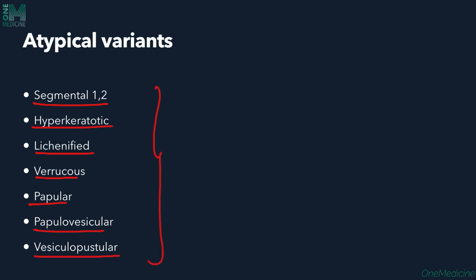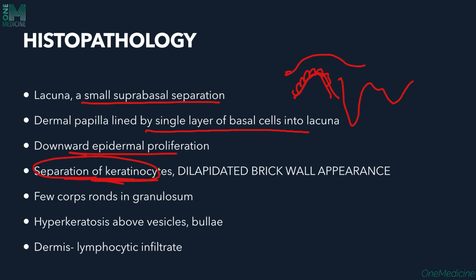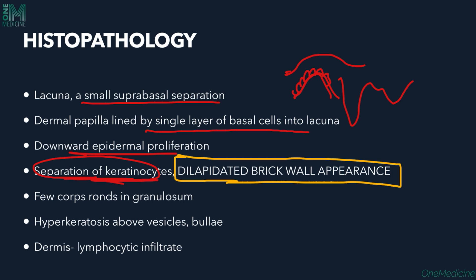On histopathology, a lacuna — a small suprabasal separation — is found just above the epidermis. The dermal papilla, lined by a single layer of basal cells, protrudes into the lacuna. Downward proliferation of the epidermis also occurs. Separation of keratinocytes due to desmosome destruction gives the characteristic 'dilapidated brick wall' appearance. Corps ronds — dyskeratotic keratinocytes — similar to those in Darier's disease, can be seen in the stratum granulosum. Hyperkeratosis above the vesicles and lymphocytic infiltrate in the dermis may also be present.